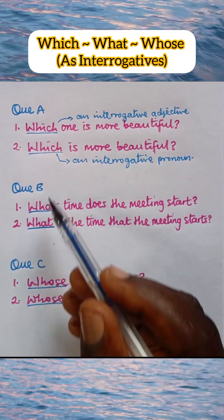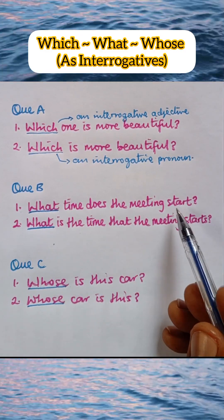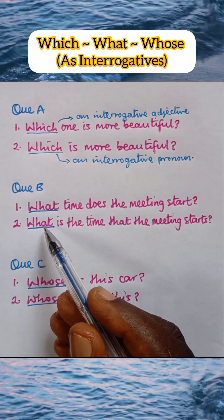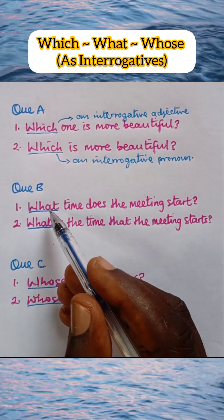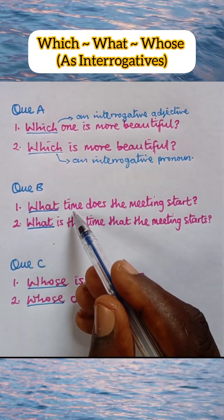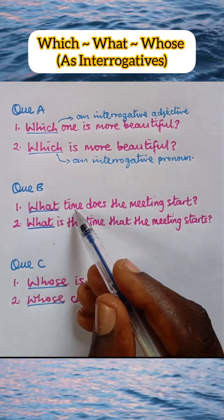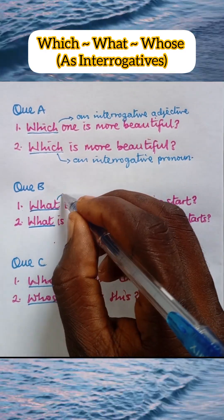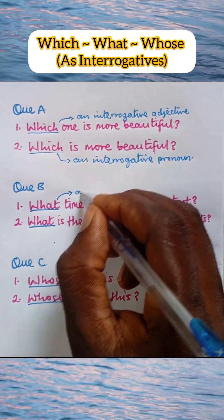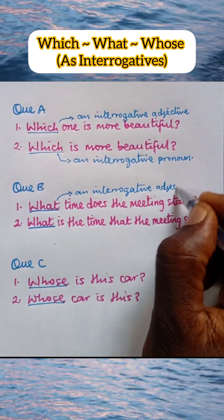Now let's go to question B. The first one says 'what time does the meeting start?' Of course, both are interrogative words. But if you look at this 'what,' it modifies the noun 'time,' and being a modifier it is an adjective. So 'what' here is an interrogative adjective.